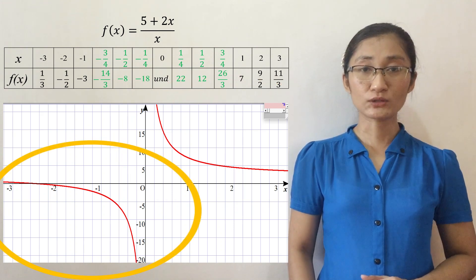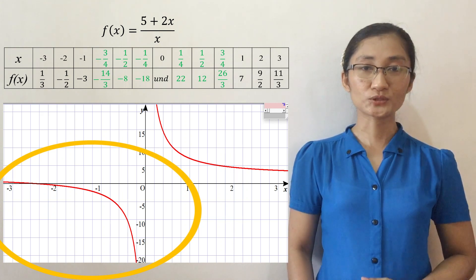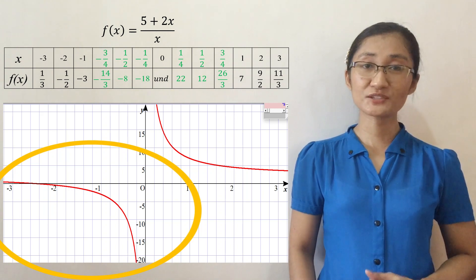Now, look at the graph below. While y cannot be 0, y gets closer and closer or it approaches and approaches negative infinity as x approaches 0 from the left.